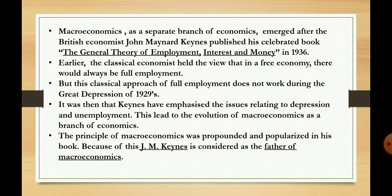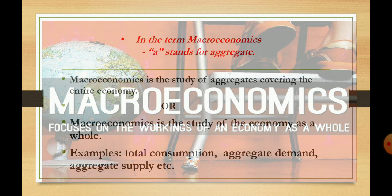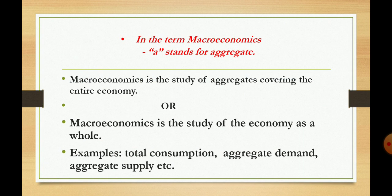This is why J.M. Keynes is considered the father of macroeconomics. Now, macroeconomics is quite different from microeconomics. Microeconomics is related to the study of individual units of an economy, but macroeconomics is related to the study of the economy as a whole — it focuses on the working of the economy as a whole. As a tip: in the term MACRO, 'A' stands for aggregate — remember, A stands for aggregate. Macroeconomics is the study of aggregates covering the entire economy.